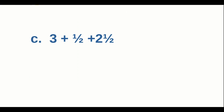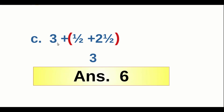Consider this one — there are two fractions. We can add like this: 3 plus 2.5 plus one-half. It is better to first add 2.5 and one-half, which is definitely 3. Then 3 plus 3 equals 6 as the final answer. This is another calculation we can do in our head.